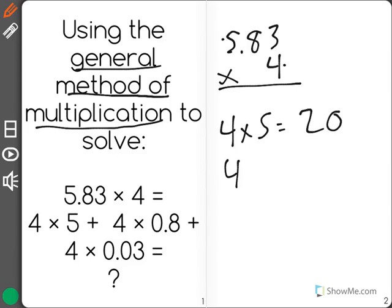Then we have 4 times 0.8. Here's our 0.8 and our 4, will equal... I know 4 times 8 is 32, but we have one number after the decimal place, so we need the same in our answer: 3.2.